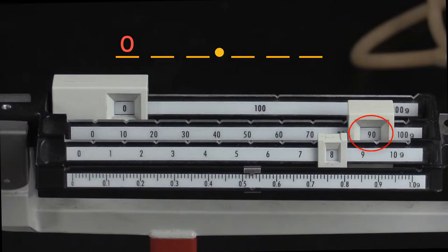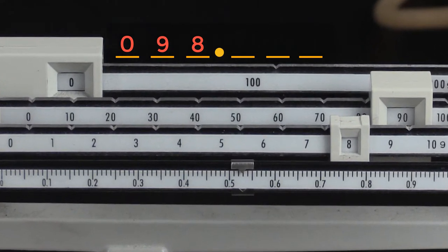Next we move to the tens place. The slider is in the 90 slot, so there is a nine in the tens place. We do the same for the ones place beam, and we see that it is in the eight slot. So we put an eight in the ones place for our measurement.